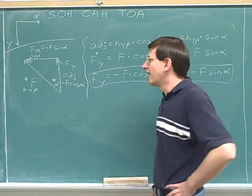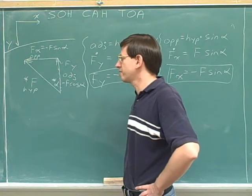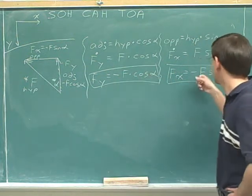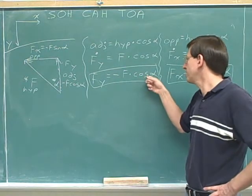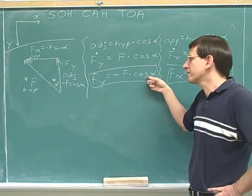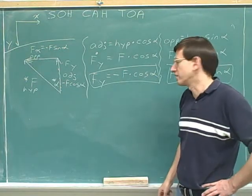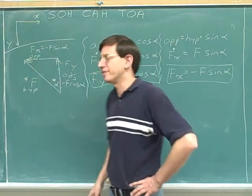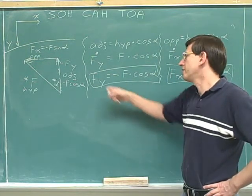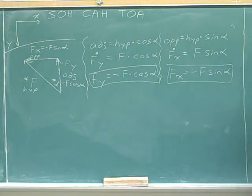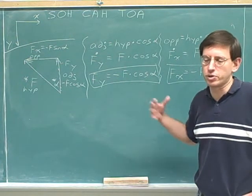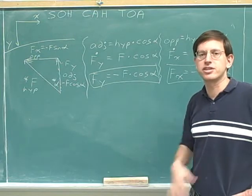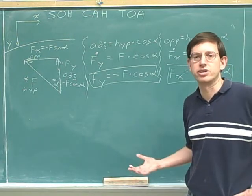Remember that on this type of problem, the convention is that the answers have to involve just the variables you were given. So our answers here have to include just F and alpha. If this answer here included F sub X, it wouldn't be finished. You're not allowed to use the unknowns in your answer. You're only allowed to use the variables you were originally given. So you have to keep working until you get an answer where each unknown is in terms only of the original givens.